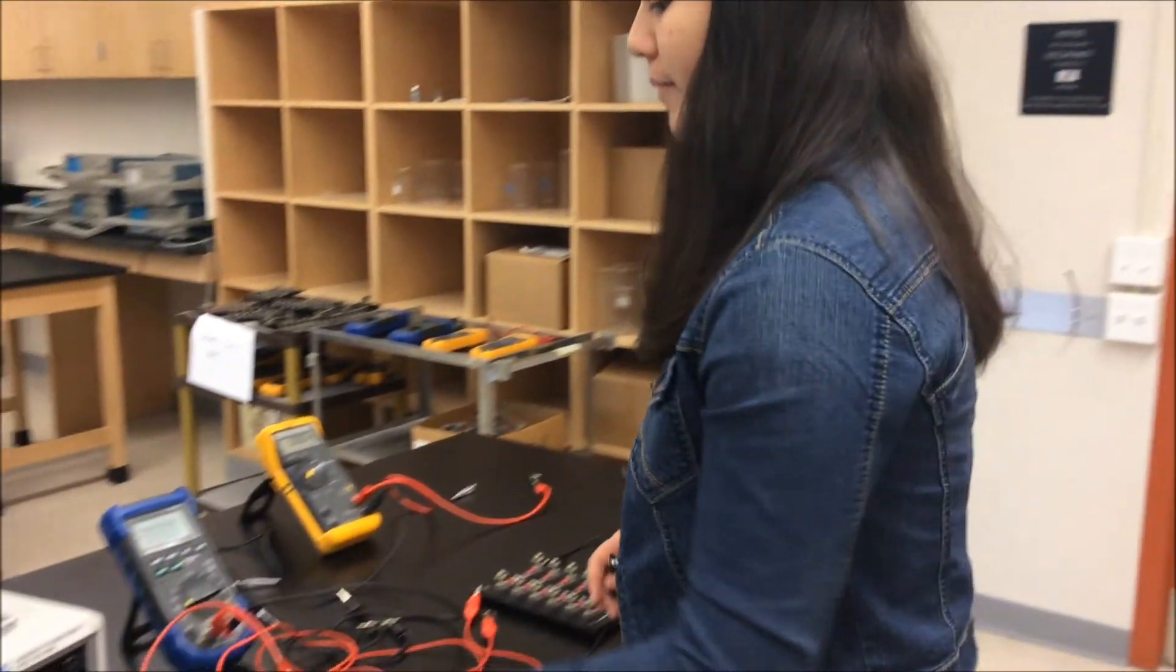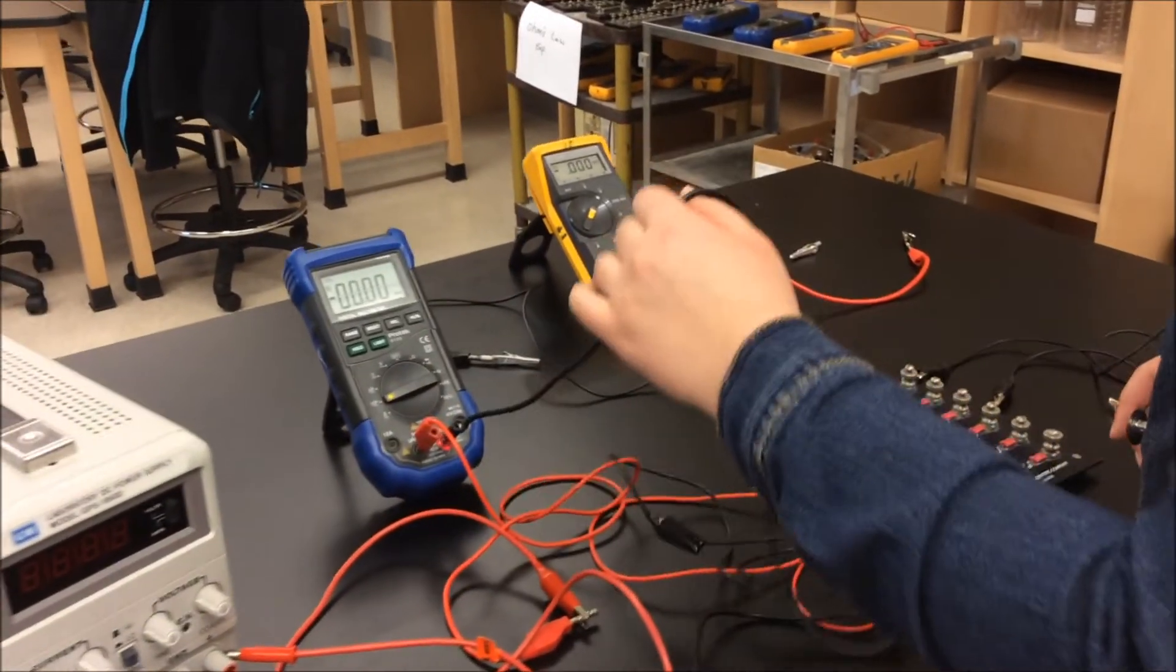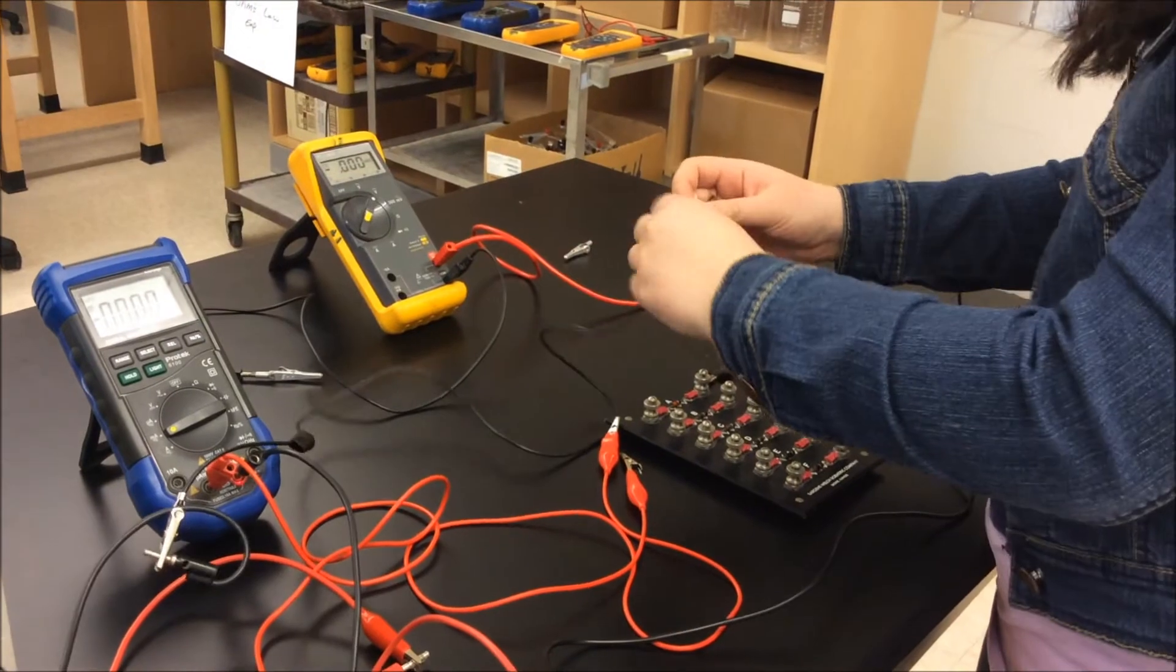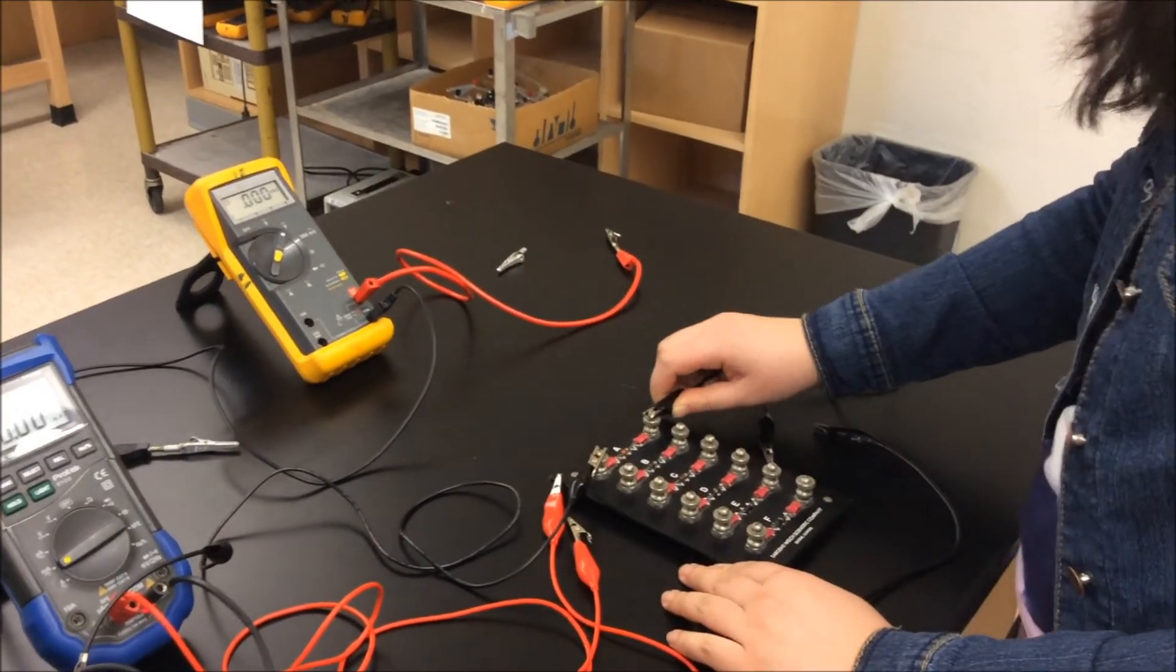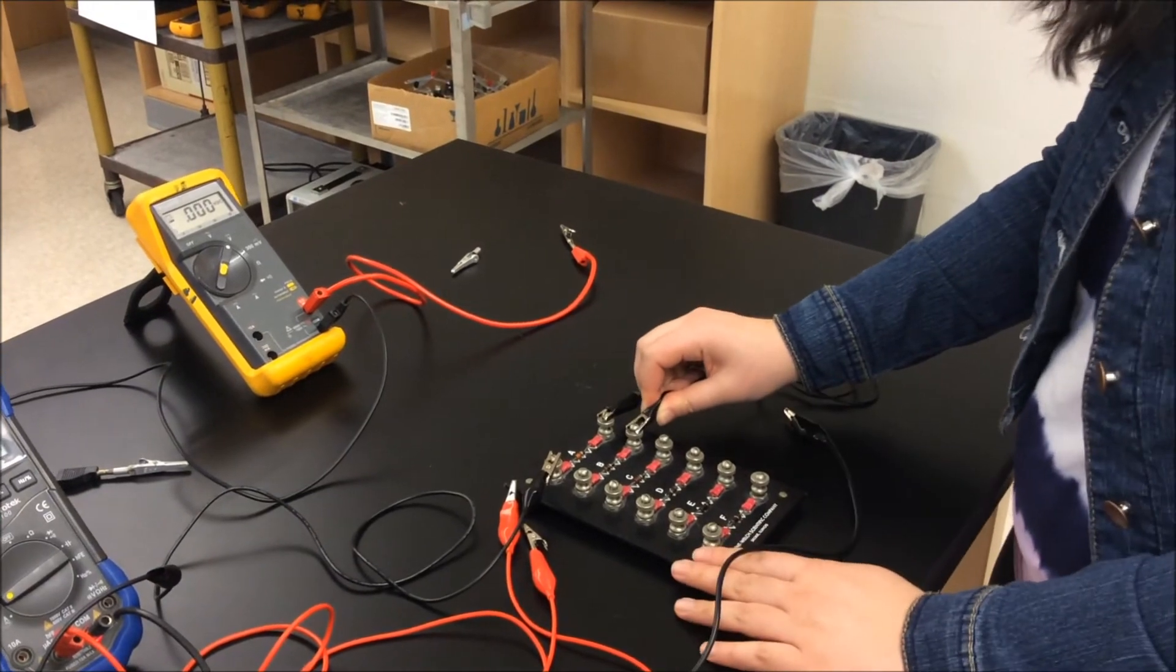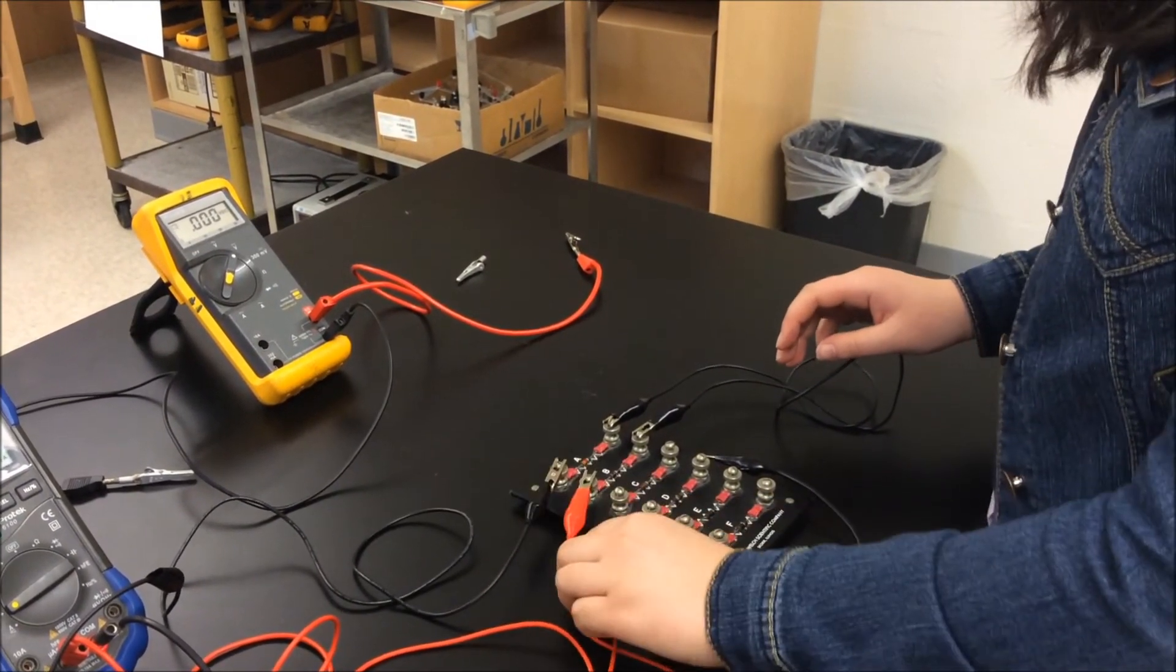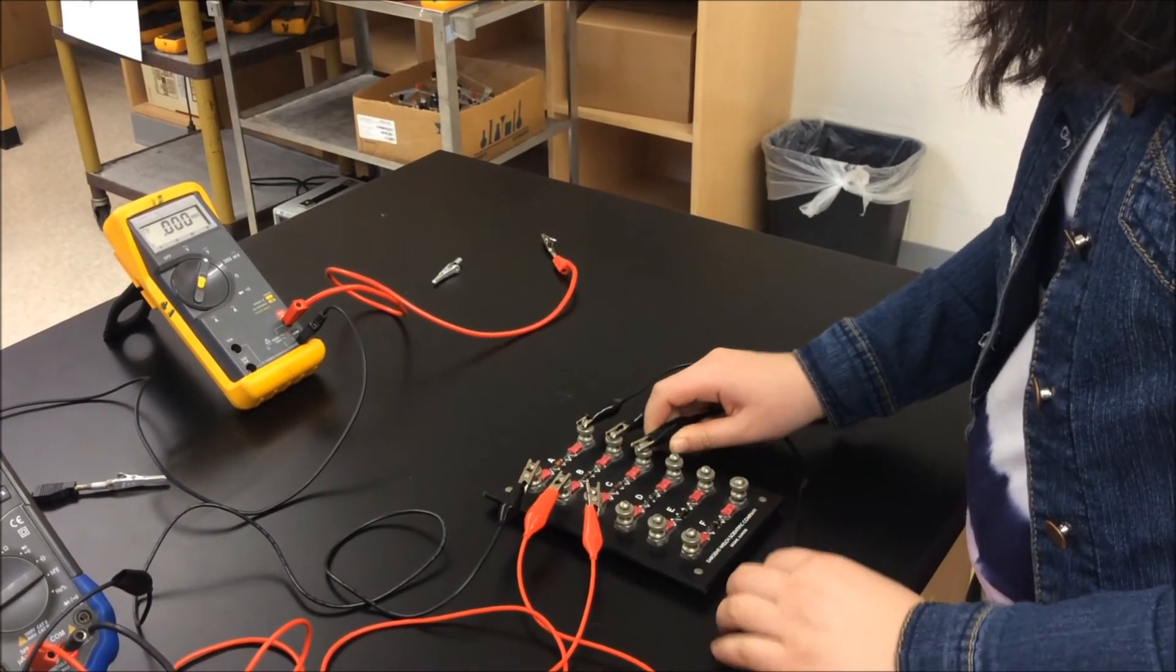For part two, the first thing that we're going to do is connect the resistors in series. So you want to connect the power supply to the ammeter. Then from the ammeter, you're going to connect it to resistor A. Then from resistor A to resistor B. And from resistor B to resistor C. And then from resistor C all the way back to the power supply.